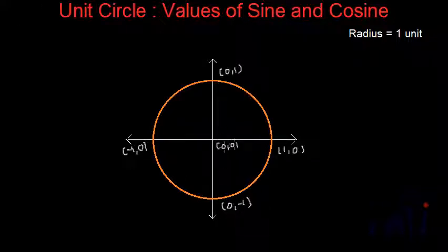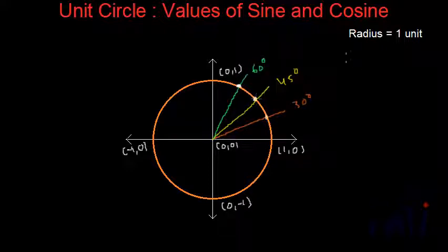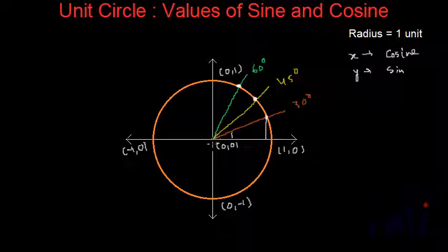Angles are measured in the counterclockwise direction. Let me draw lines representing 45 degrees, 30 degrees, and 60 degrees. If we can find the coordinates of these points, the x-coordinate represents cosine and the y-coordinate represents sine. So for 30 degrees, the y-value represents sine 30 and the x-value represents cosine 30 — the value on the x-axis and the value on the y-axis.